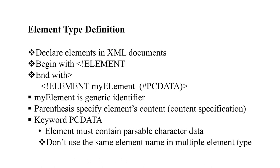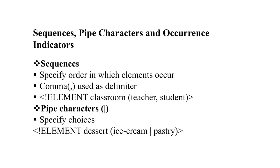When declaring elements in an XML document, they start with the exclamation sign and always end with a closing angle bracket, and we give PCDATA. The element name is a generic identifier and the parentheses specify only the content specification — what is there. The keyword PCDATA means it can contain possible or parsed character data. We are not supposed to use the same data element in multiple element types. There is a vocabulary set — one is sequence, another is the pipe character, then occurrence characters. Sequence uses a comma sign as an identifier, like classroom which has two attributes: teacher and student.